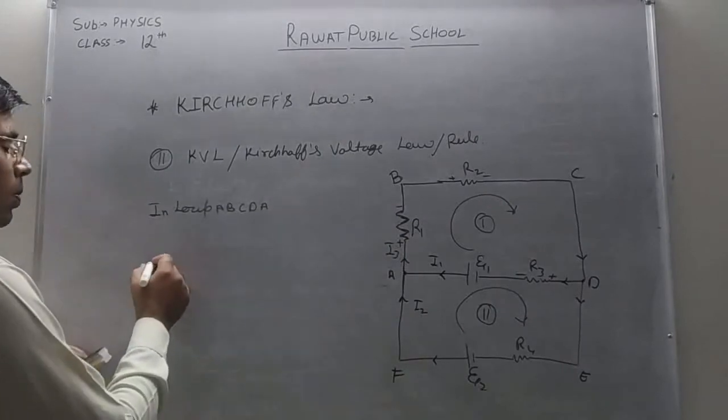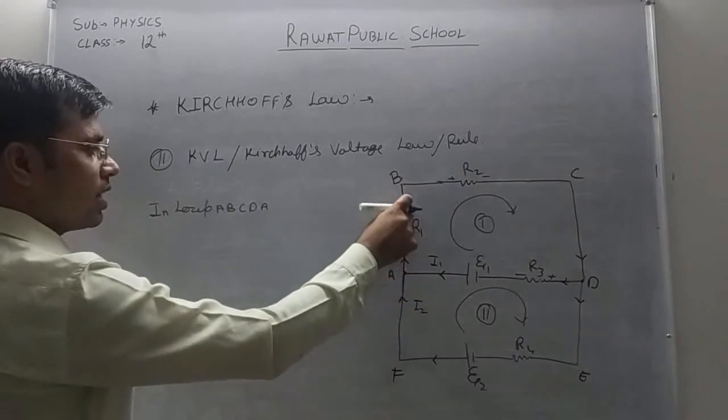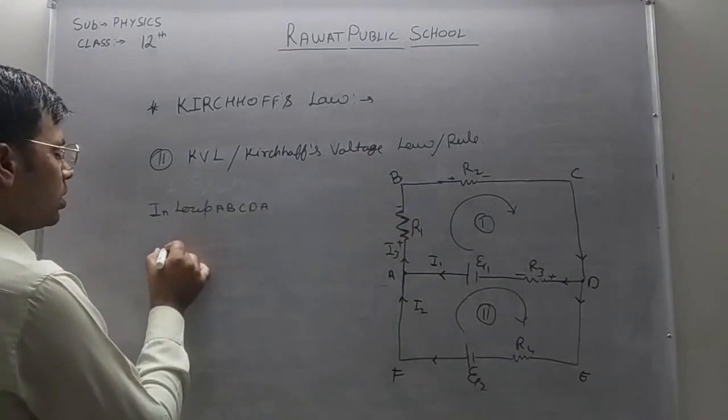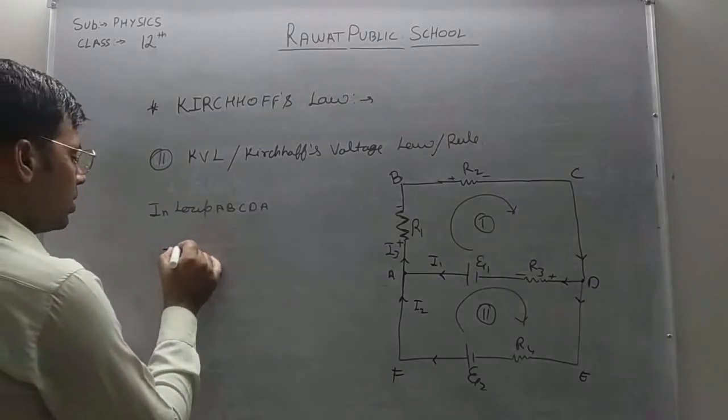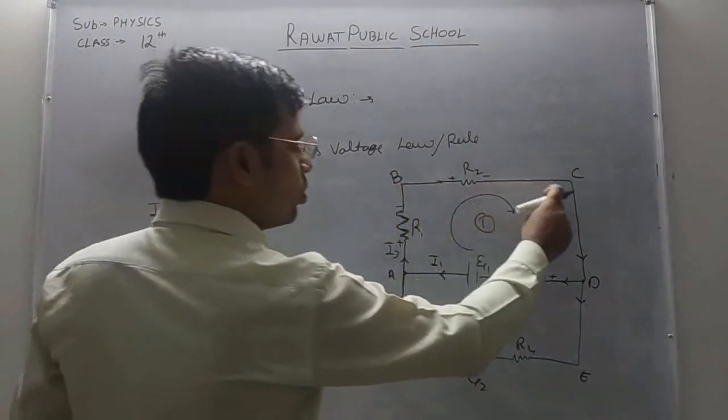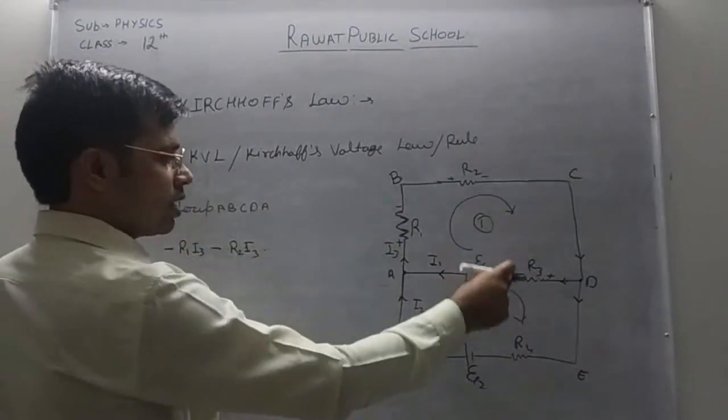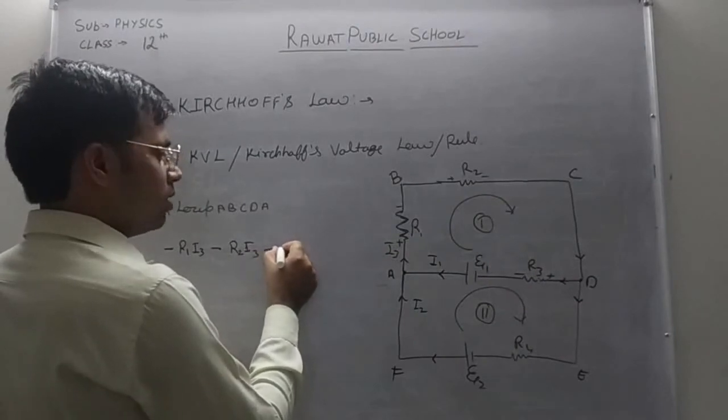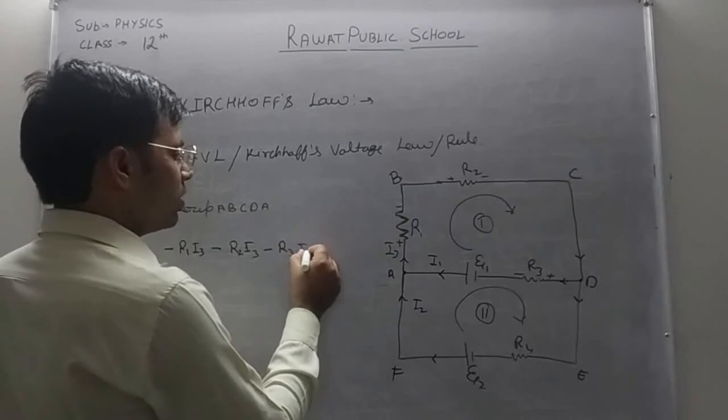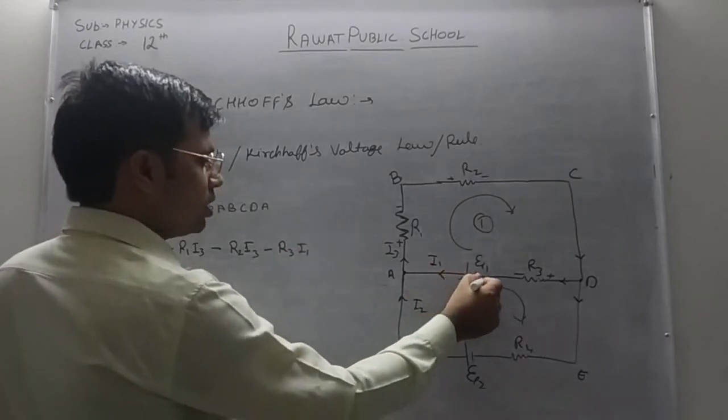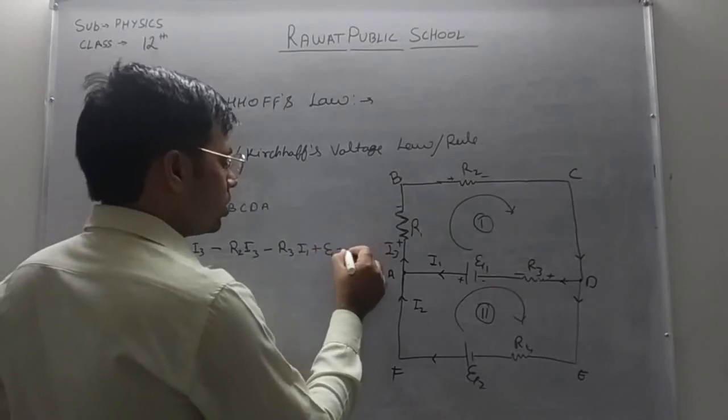So, yaha se start karayam. First device we are encounter is resistor. And the last terminal was this resistor is negative. So, put here it is negative. Minus I1 R1. Then we move to the next device. Next device is again a resistor. So, this is last terminal is negative. So, it is negative. Minus I1 R3. I1 is current. And here the last terminal is positive. Plus epsilon 1.